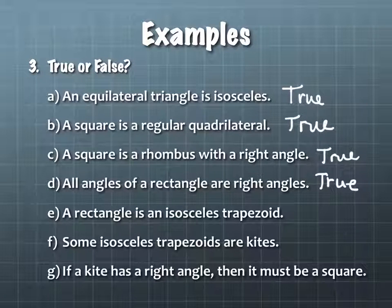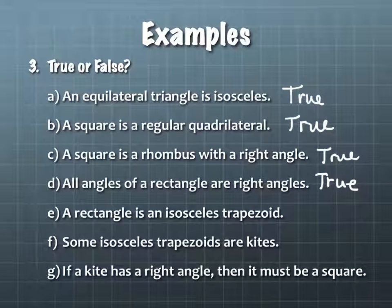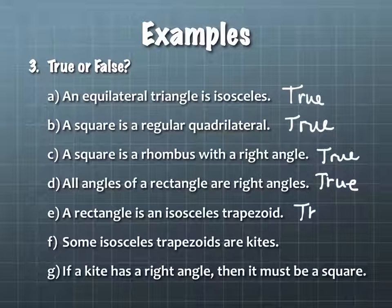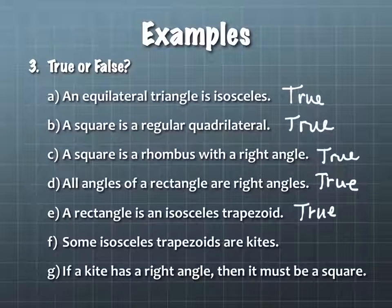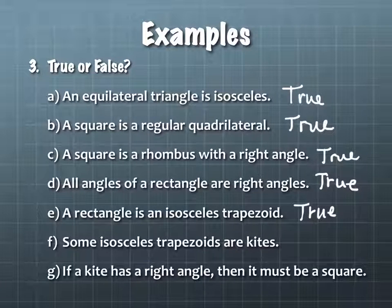A rectangle is an isosceles trapezoid. True. It's isosceles because I have two pairs of base angles congruent, and it is a trapezoid because I have at least one pair — in fact two pairs — of parallel sides.